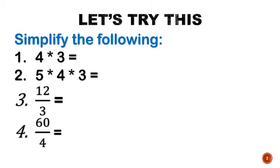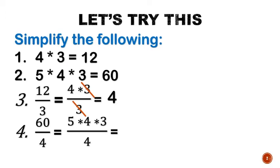Let's try the following. 4 times 3, that's 12. 5 times 4 times 3, that's 60. Now, 12 divided by 3 is obviously 4, but you can also write it as 4 times 3 divided by 3, canceling 3, that will also yield 4. Similarly, 60 can be written as 5 times 4 times 3, you can cancel the 4, then what you're left is 5 times 3, that's 15. That will be useful in the next topic.